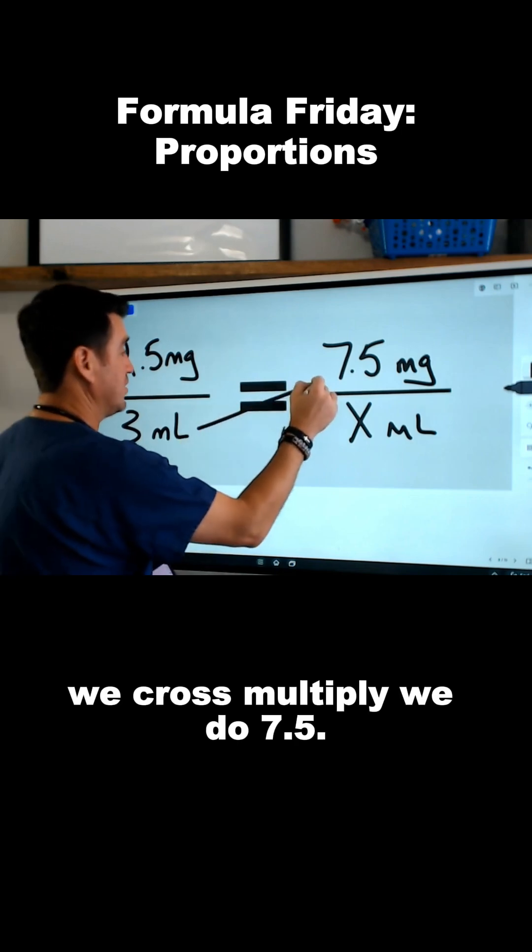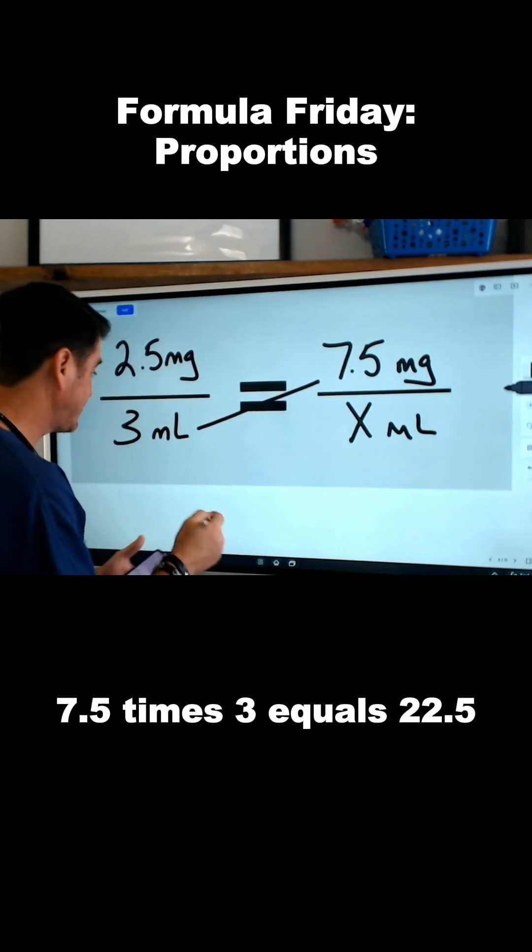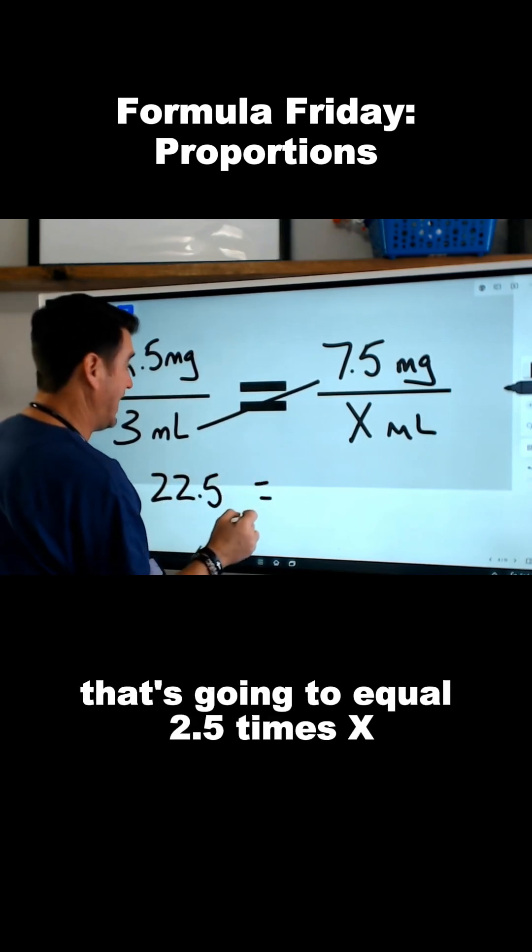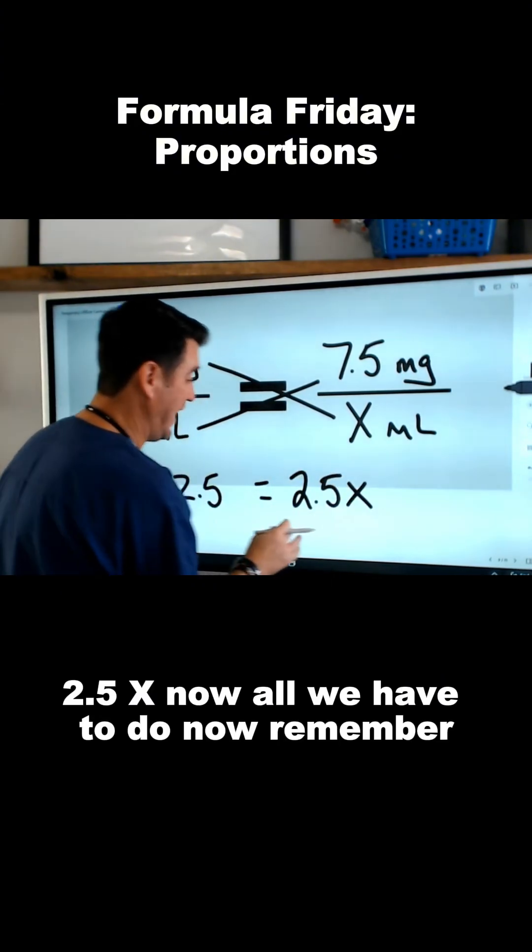Well, let's see. We cross multiply. We do 7.5 times 3 equals 22.5. That's going to equal 2.5 times x.